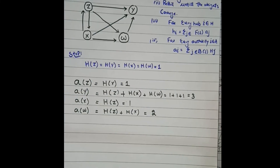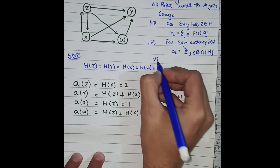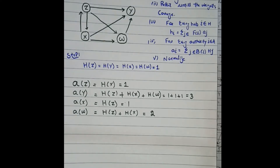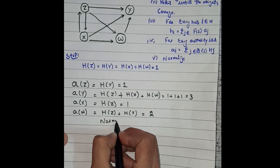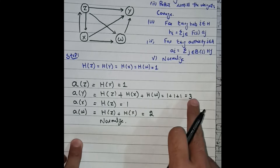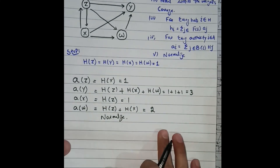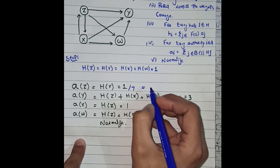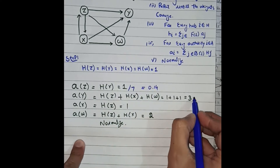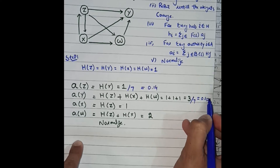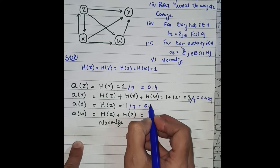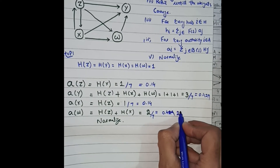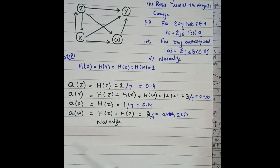Step one also includes a normalization step. After calculating the authority values — Z=1, Y=3, X=1, W=2 — the total is seven. We divide each value by seven. So authority of Z = 1/7 ≈ 0.14, authority of Y = 3/7 ≈ 0.429, authority of X ≈ 0.14, and authority of W = 2/7 ≈ 0.2857.